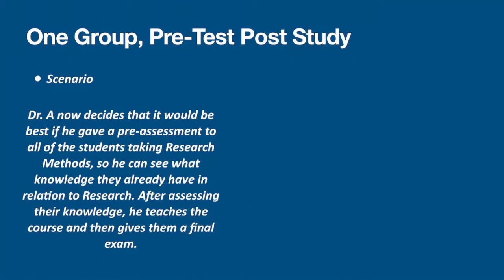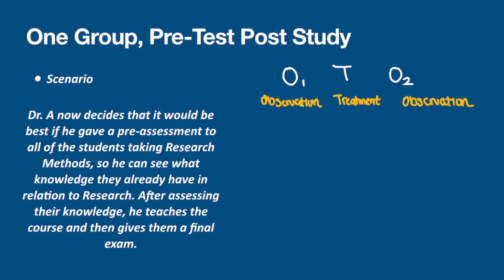The next study is what we call the one-group pre-test post-test study. Let's identify the letters that make up our experimental notation. The letters are O, then T, and then another O. The first O represents the observation — the pre-test. The T represents the treatment. The second O represents another observation — the post-test. The numbers simply identify which observation we're referring to.